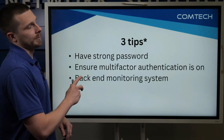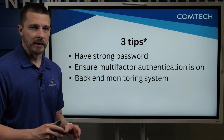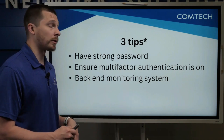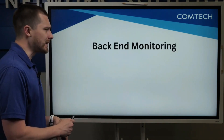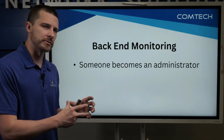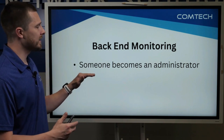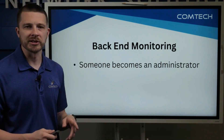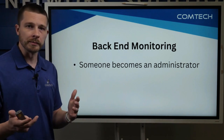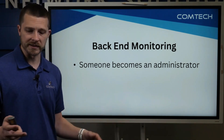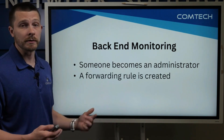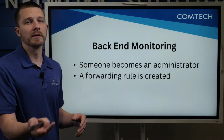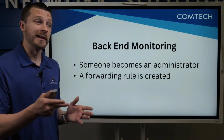The third tip is back-end monitoring. A lot of it is built into Office 365, but I don't see a lot of people having it turned on. Inside of Office 365, you have the ability to make it so that when someone becomes an administrator — let's say Jim in your company is elevated to administrator permissions — it can alert certain people and ask, was this on purpose? It will also alert if a forwarding rule is created, so if Jim forwards all of his emails to his Gmail, it will let you know.